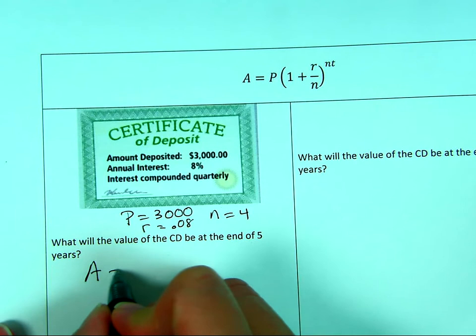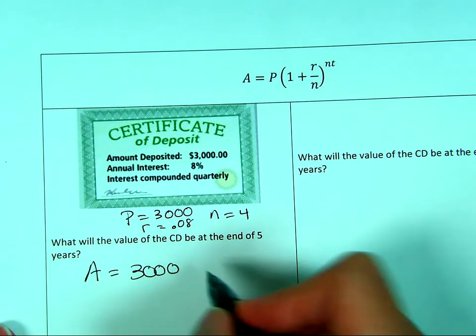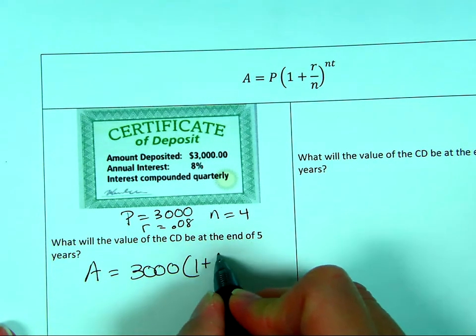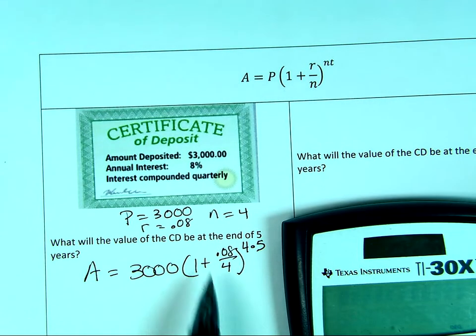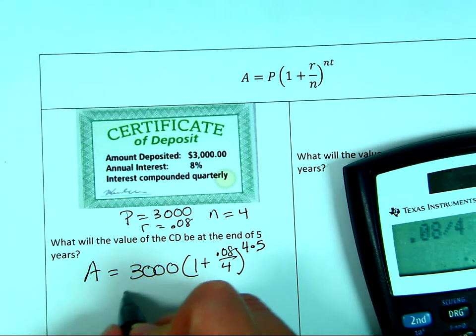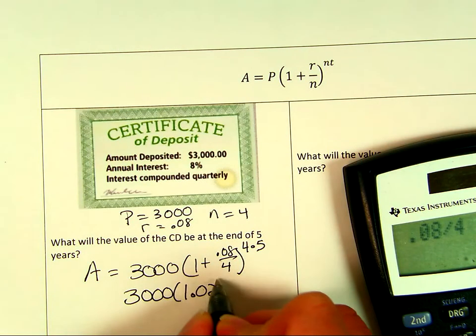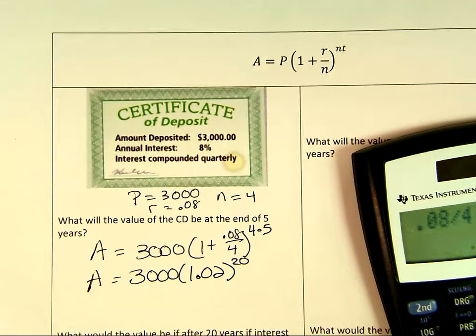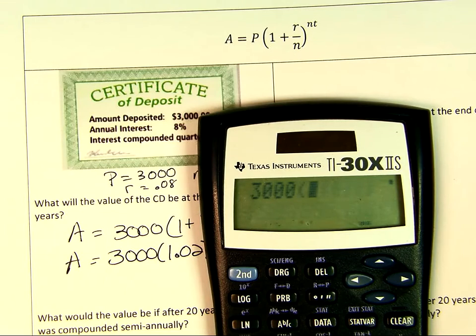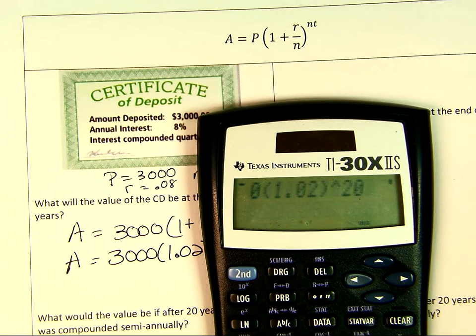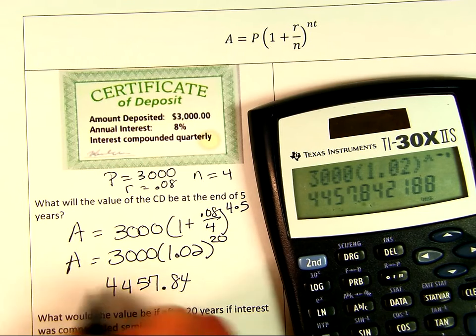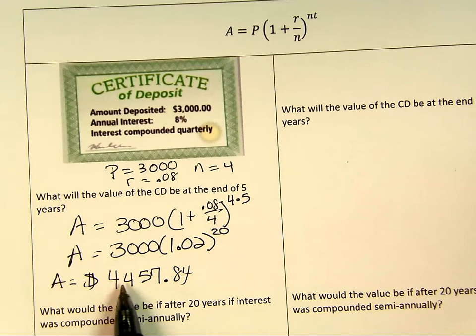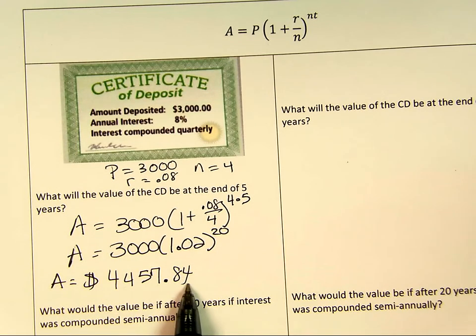Now I have all my parts and I can find the amount at the end. I'm going to take my 3,000 and multiply it by one plus the rate divided by four to the four times five. I like to figure this part first: 0.08 divided by four is 0.02. So I rewrite it as 3000(1.02)^20, because four times five is 20. We're going to say $3,000 times 1.02 to the 20th power, and that is $4,457.84. Since we're talking about money, we always round to the nearest penny.